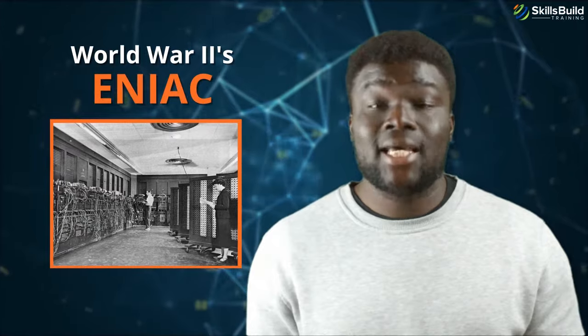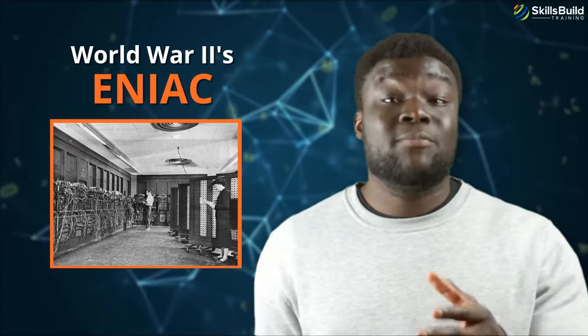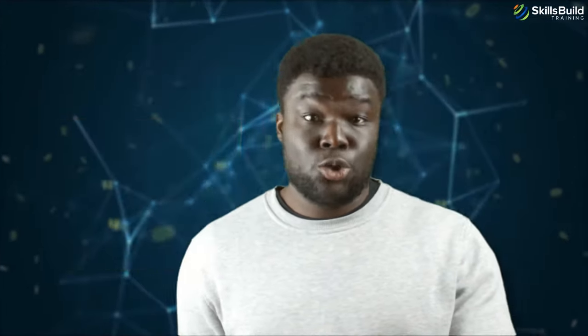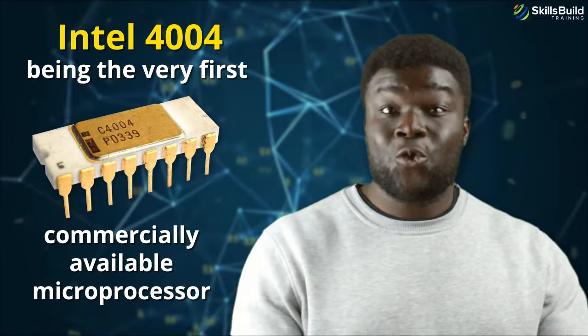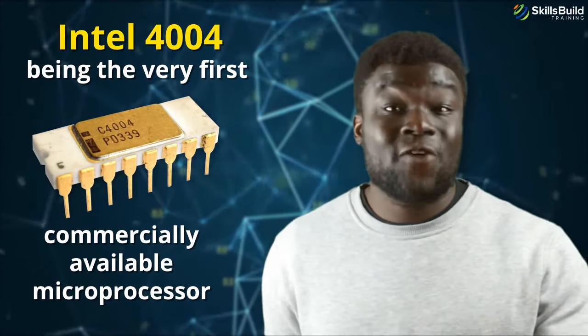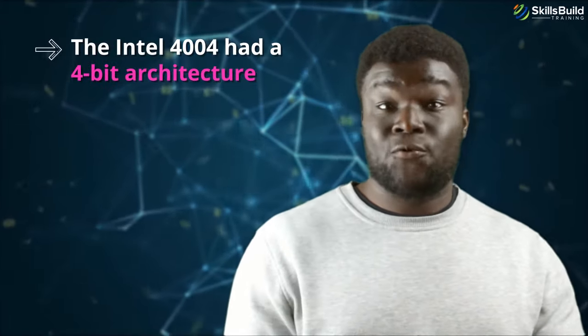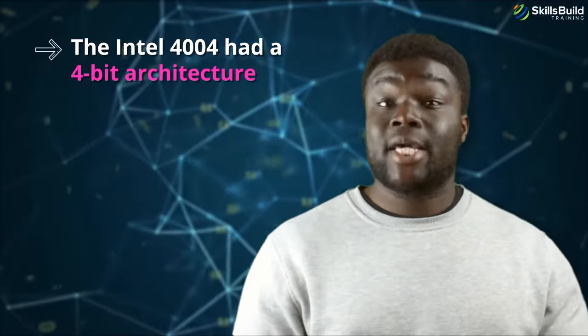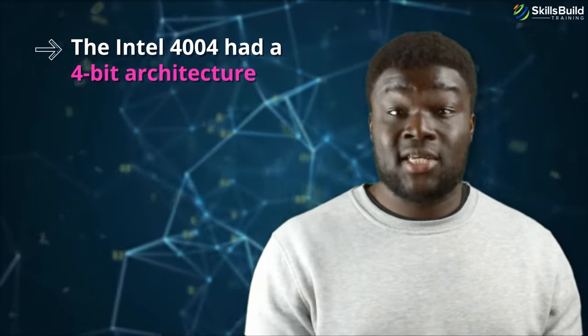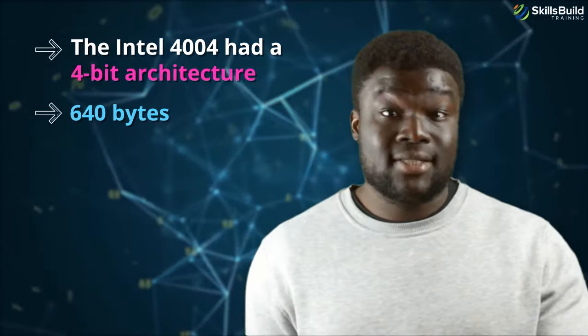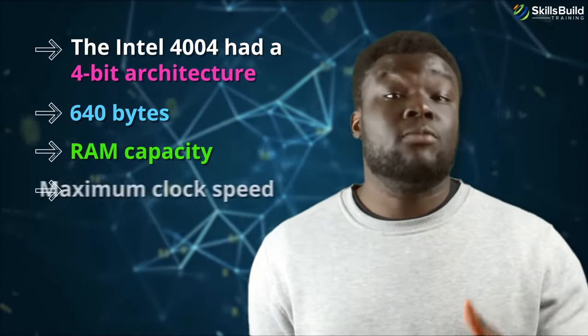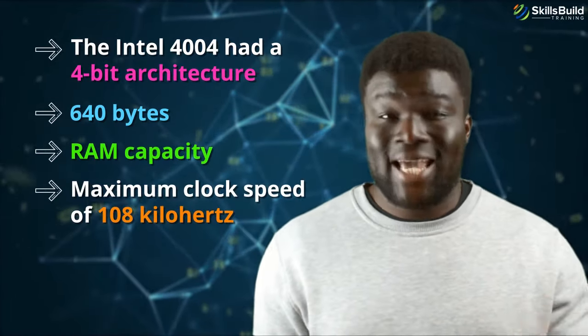Although electronic computers have been around since World War 2's ENIAC, the ability to put their CPU into a single circuit board and chip became a reality only in the 70s. With the Intel 4004 being the very first commercially available microprocessor, the Intel 4004 had a 4-bit architecture, allowing an addressable memory capacity of 640 bytes, that is RAM capacity, and a maximum clock speed of 108 kHz.